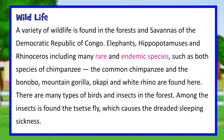A variety of wildlife is found in the forests and savannas of the Democratic Republic of Congo. Elephants, hippopotamuses and rhinoceros, including many rare and endemic species such as both species of chimpanzee — the common chimpanzee and the bonobo — mountain gorilla, okapi and white rhino are found here. There are many types of birds and insects in the forest. Among the insects is found the tsetse fly, which causes the dreaded sleeping sickness.